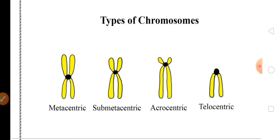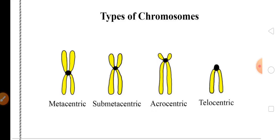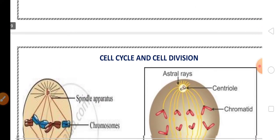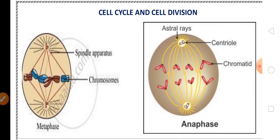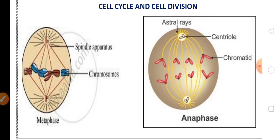Another important diagram from this chapter is the structure of chloroplast. The types of chromosomes based on the position of the centromere are also very important for the two-mark portion. From the chapter Cell Cycle, metaphase or anaphase diagrams may be asked in the exam for two marks.